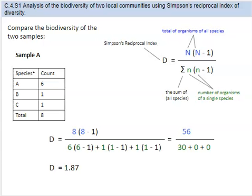Now you're going to check your work with mine. So we have our big N, which is 8 times 8 minus 1, also known as 8 times 7, and then we have the sum of our little n times little n minus 1, plus the next little n, plus the next little n. If you look here, you can see you're adding up all of these down here, and so that ends up being 30 plus 0 plus 0. So you have a reciprocal index of 1.87.